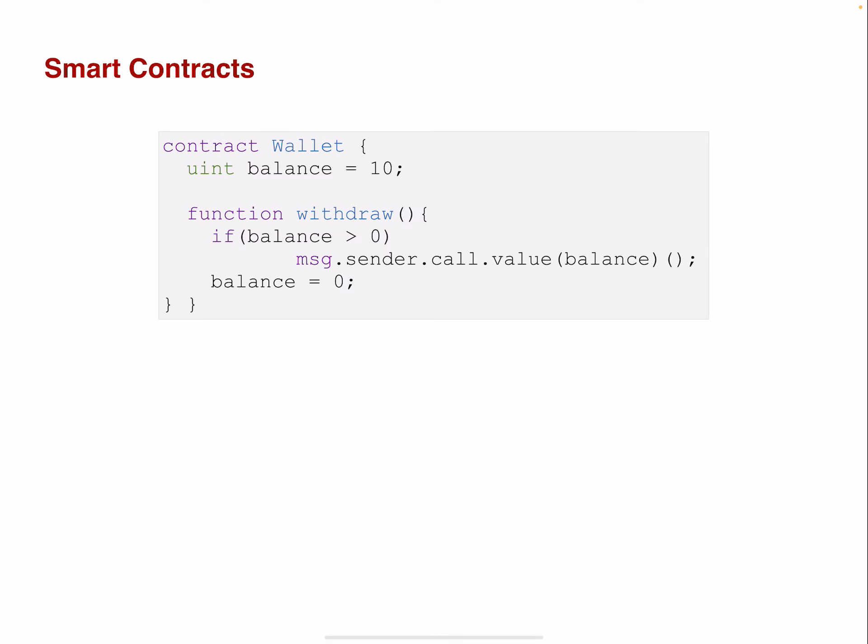An example is something you can see here. We have a smart contract called wallet. It has a state variable called balance, initialized with the value 10. This smart contract wallet has a function called withdraw. If the balance is superior to zero, it will perform a call — it will send a certain amount of value, basically the amount balance, to message.sender. And message.sender is the transaction originator.